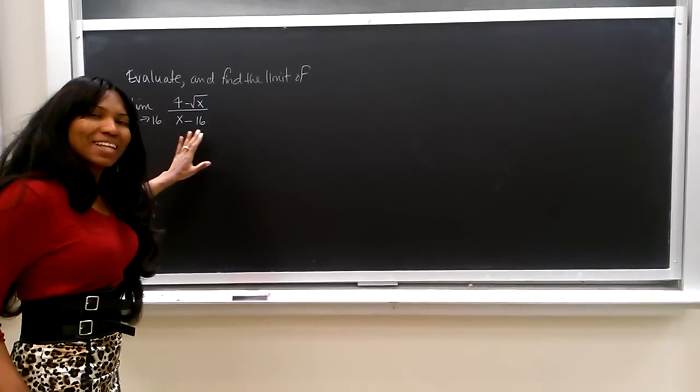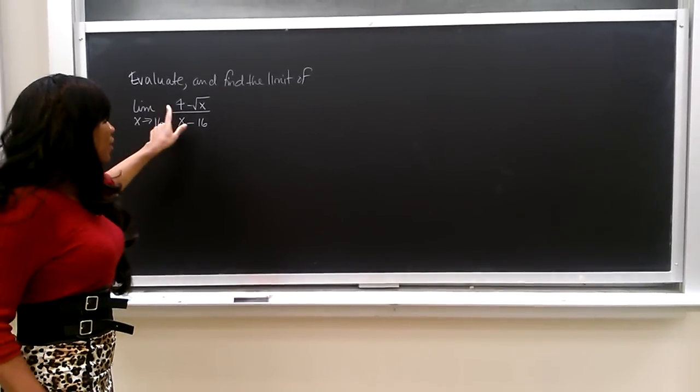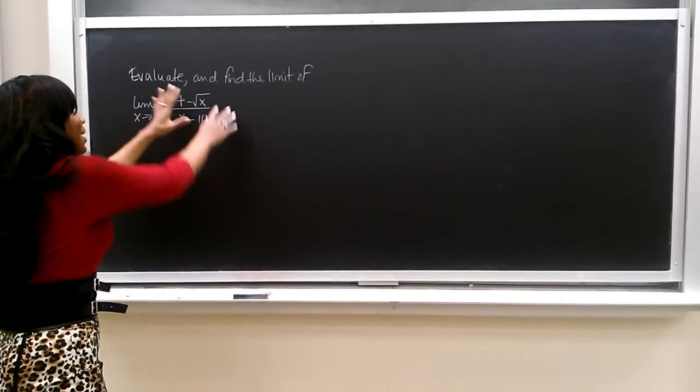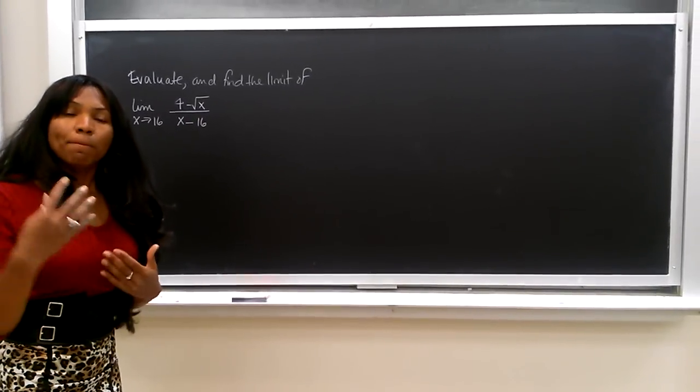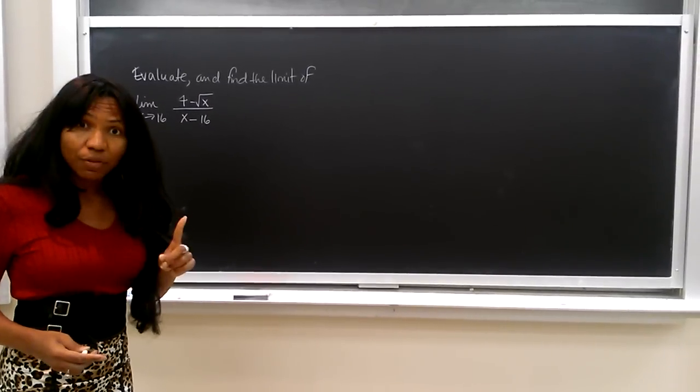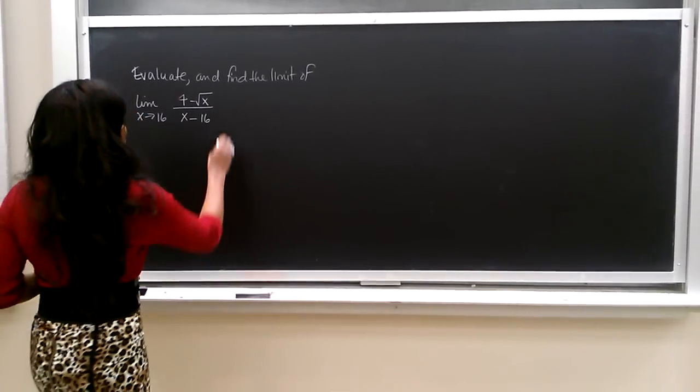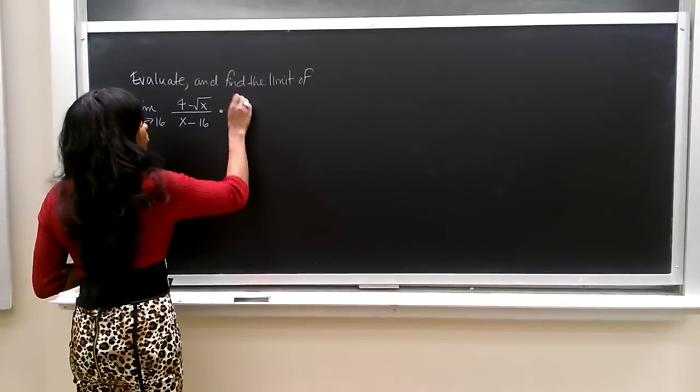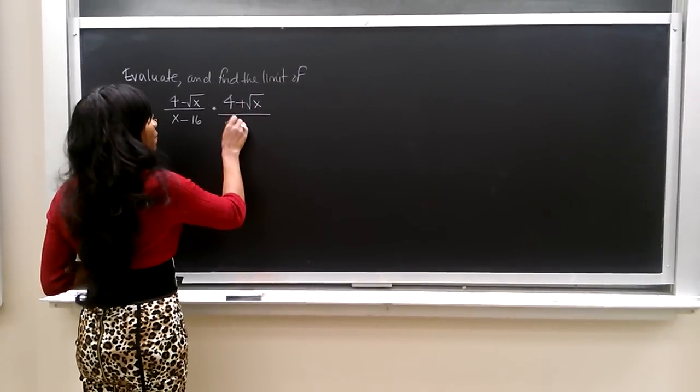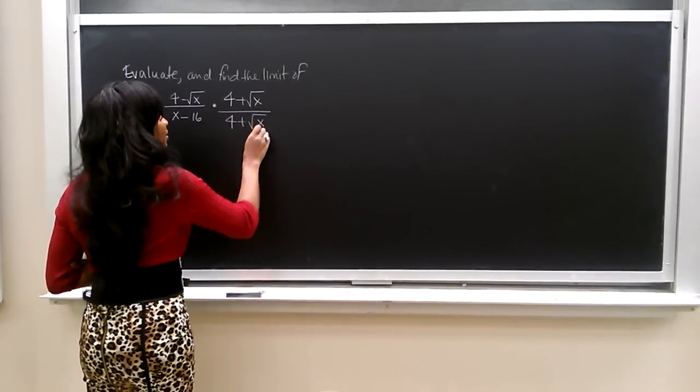When we have a square root, especially in the numerator, what we want to do is manipulate this by multiplying both the numerator and the denominator by the conjugate of the numerator. What we want to do is multiply by 4 plus the square root of x divided by 4 plus the square root of x.